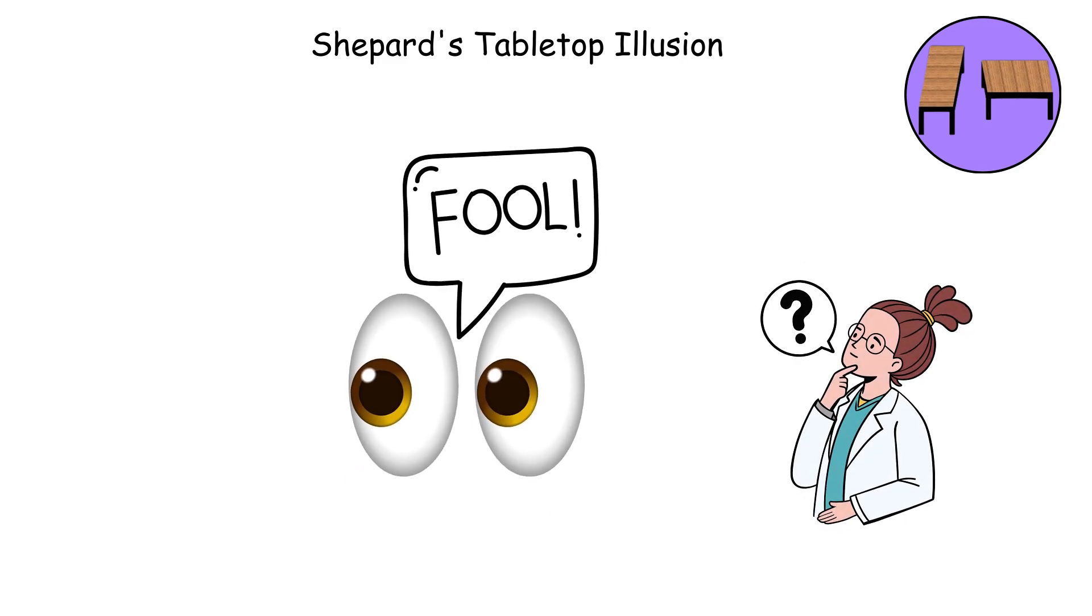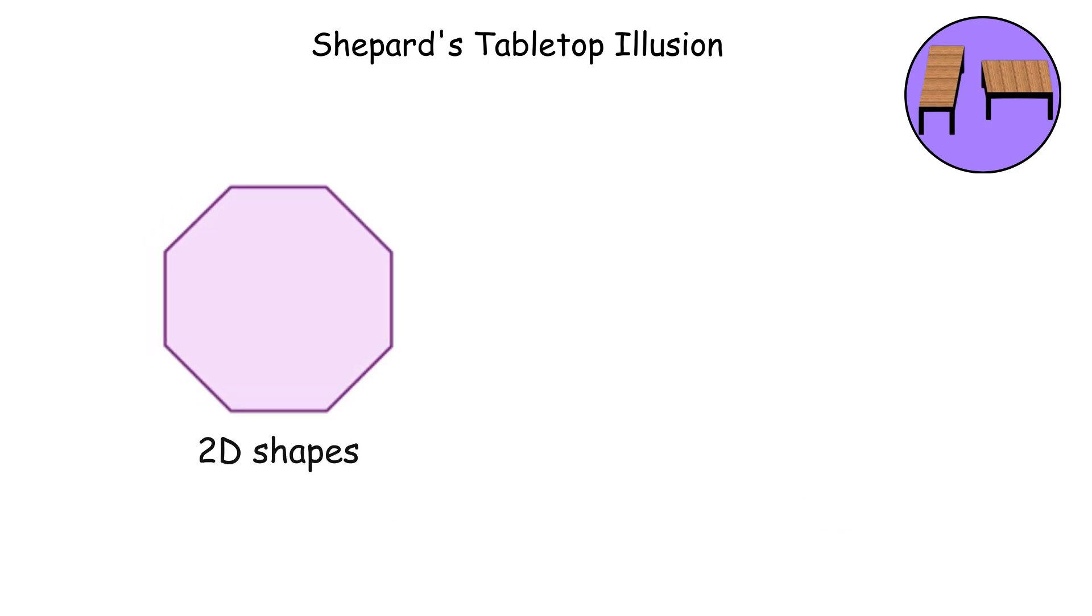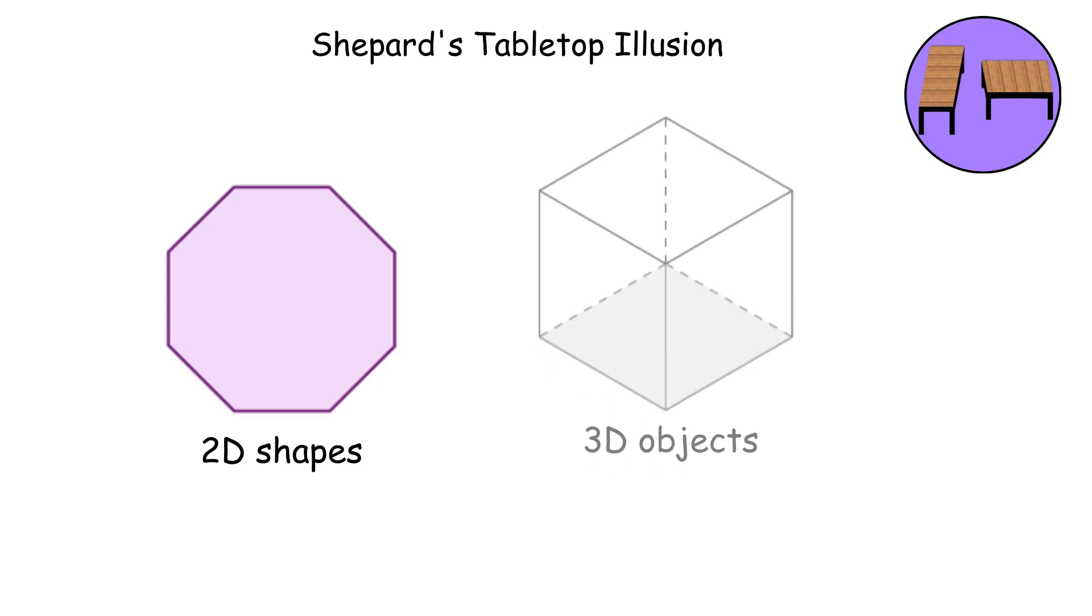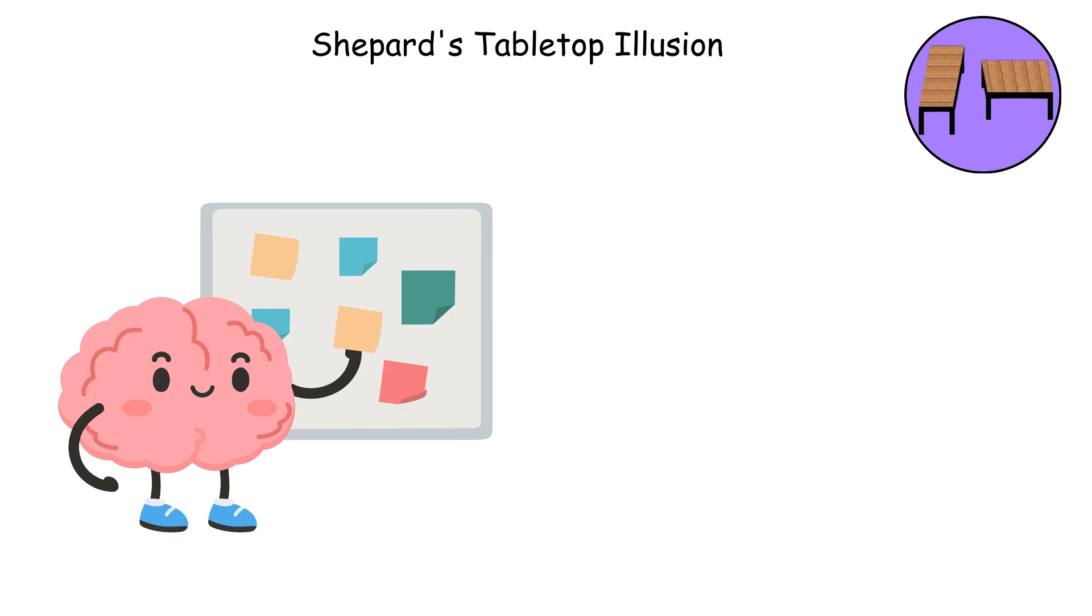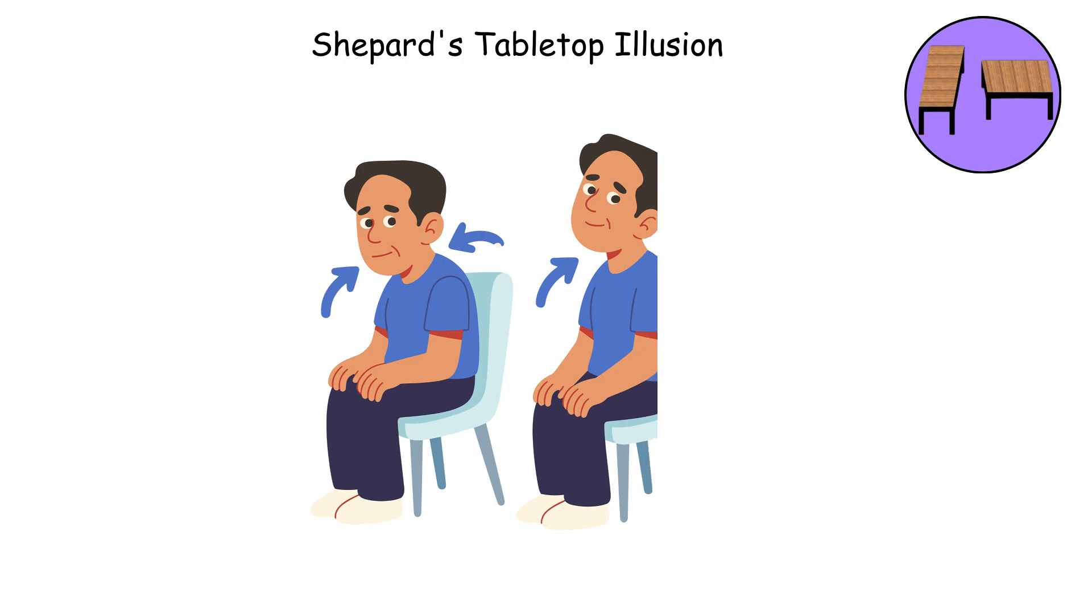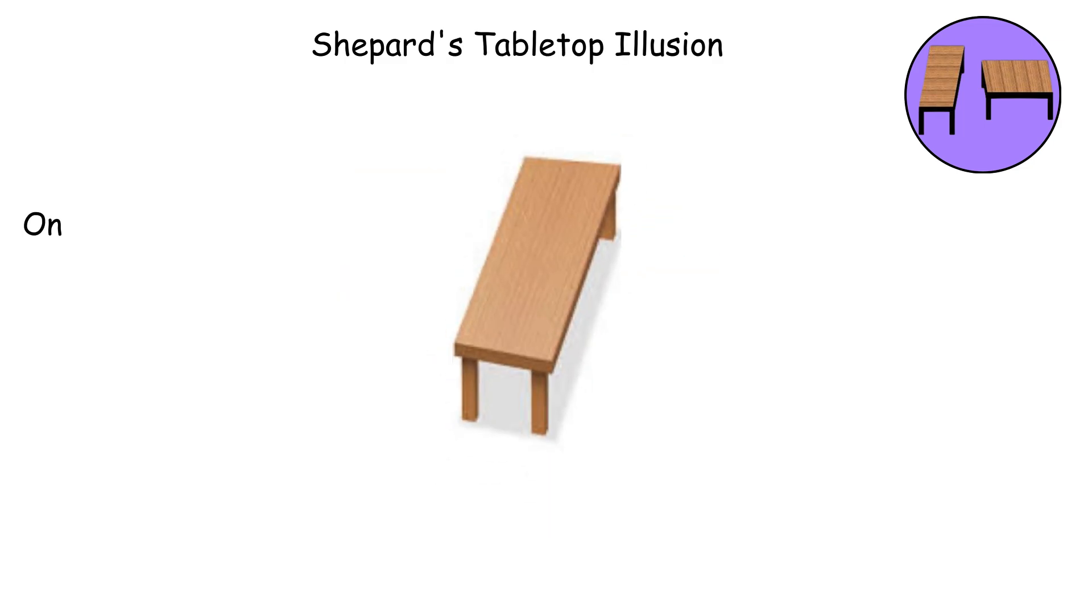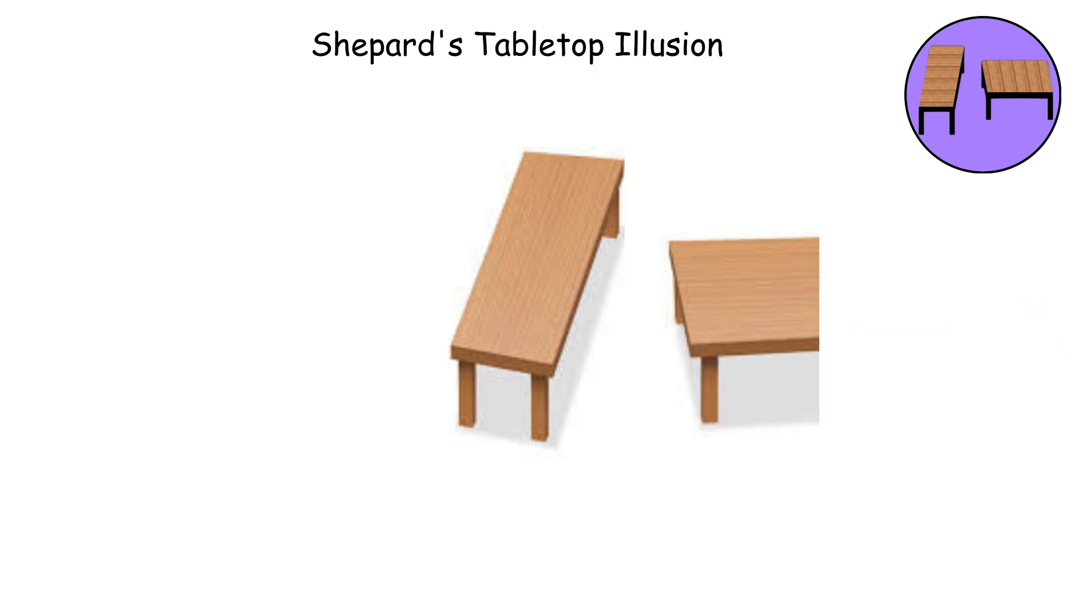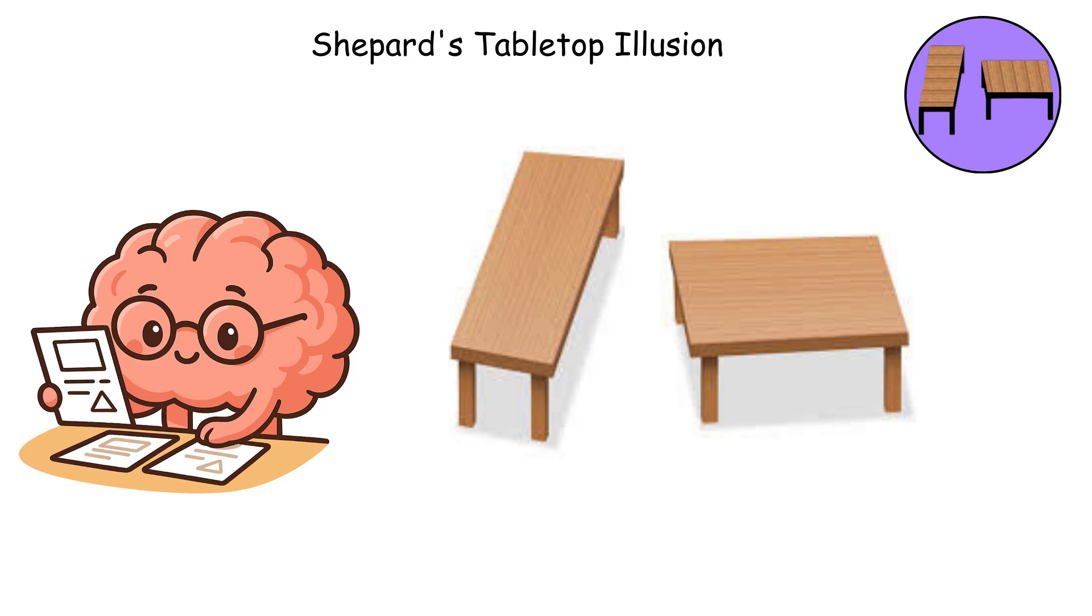The reason your eyes get fooled is that your brain interprets these 2D shapes as 3D objects in perspective, and it automatically compensates for the angle you're viewing them from. It's like your brain is a really eager assistant that corrects your work before you even ask, except it's correcting things that don't need correcting. One tabletop looks like it's receding into the distance, so your brain stretches it out mentally, while the other looks like it's facing you more directly, so your brain compresses it.